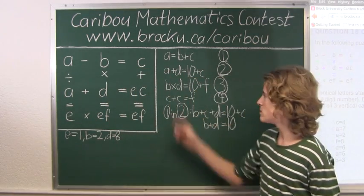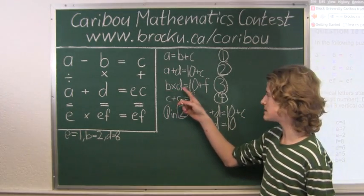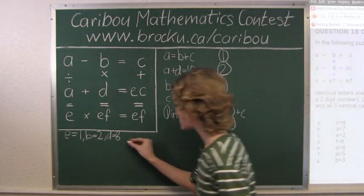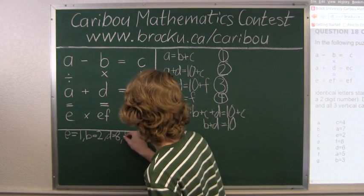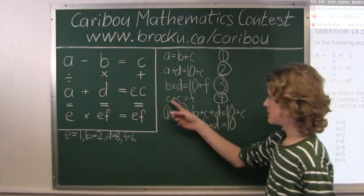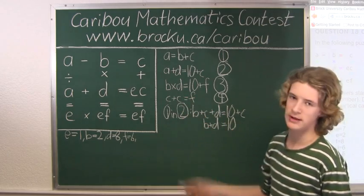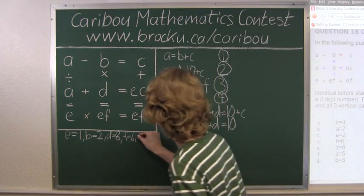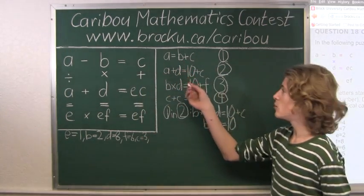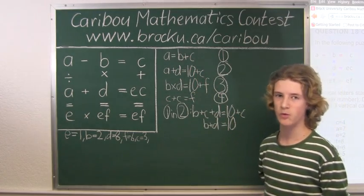So now we will substitute those values into line 3. So we have 2 times 8 equals 16 equals 10 plus F, so we know that F must equal 6. And we see in line 4, C plus C equals 6, so we know that C must equal 3. And when you look at line 1, we see that A equals 2 plus 3, so we know that A must equal 5.